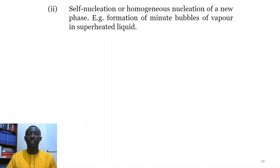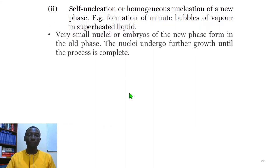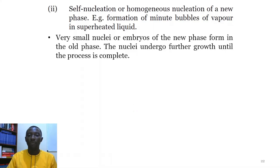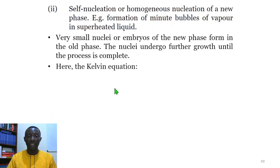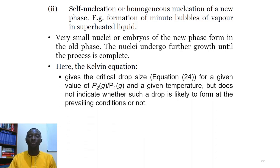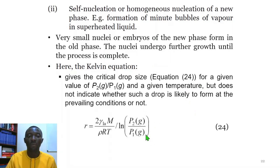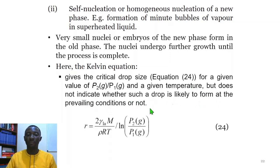Another consequence of the Kelvin equation is self-nucleation or homogeneous nucleation of a new phase — for example, formation of minute vapor bubbles in a superheated liquid. Very small nuclei or embryos of the new phase form in the old phase and undergo further growth as time progresses. The Kelvin equation gives the critical size in terms of the ratio P_2(G)/P_1(G) at a given temperature, though it does not indicate whether such a drop is likely to form under prevailing conditions.